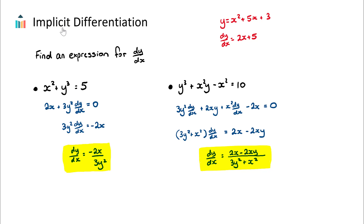The steps here are actually just all of our differentiation rules applied correctly. If I have x² + y³ = 5 and my goal is to find an expression for dy/dx — I want dy/dx equaling something — then I might be able to find the gradient of that curve at some point. So what we need to do is differentiate both sides of our equation with respect to x.